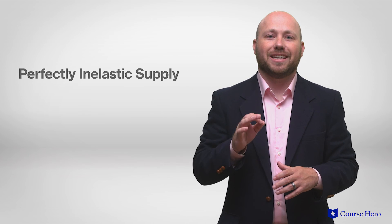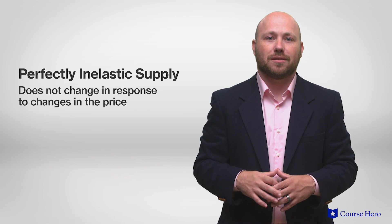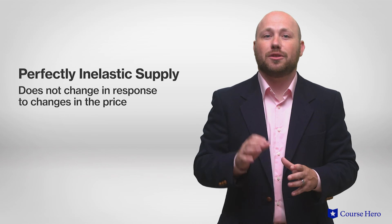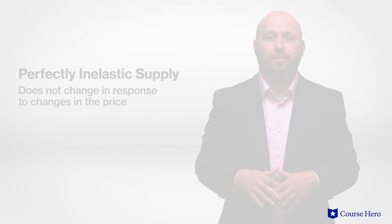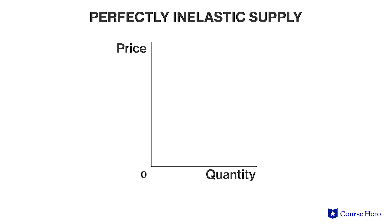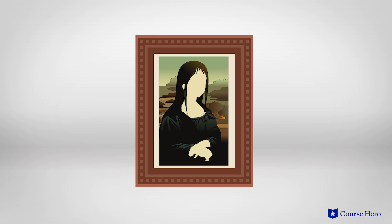A perfectly inelastic supply does not change in response to changes in the price. That is, the price elasticity of supply is equal to zero. Any change in the price of a good or service leads to no change in the quantity supplied. The supply curve is vertical. For example, there's only one of each painting by Leonardo da Vinci. Each piece is all that can be supplied to the market regardless of the price.